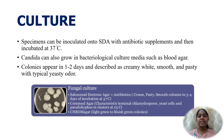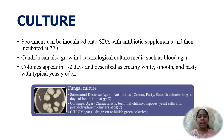For culture, specimens are inoculated into SDA medium — Sabouraud dextrose agar with antibiotic supplements — and incubated at 37°C. Candida can also grow on bacteriological culture media such as blood agar, and blood samples can be inoculated into blood culture bottles. Colonies appear in 1 to 2 days, described as creamy white, smooth, and pasty with a typical yeasty odor. Gram staining of the colonies shows Gram-positive budding yeast cells with pseudohyphae, except for C. glabrata, which does not show pseudohyphae.